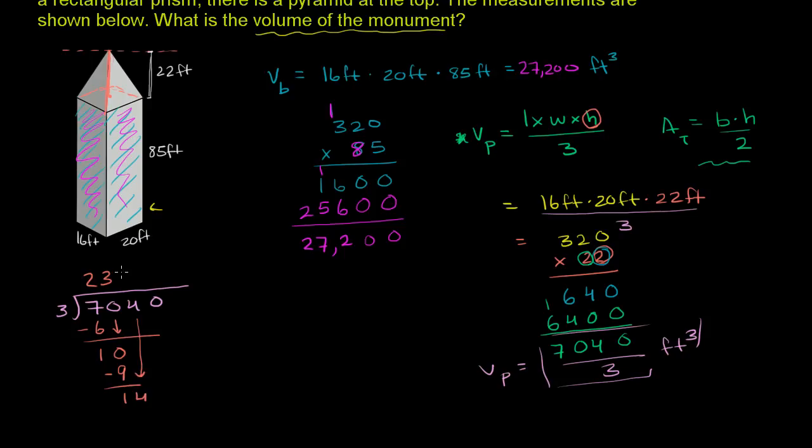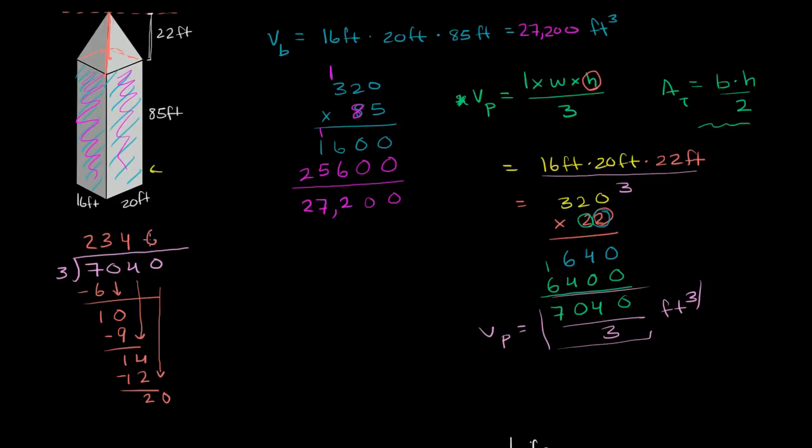Subtract. Bring down the 0. So 3 goes into 20 six times. 6 times 3 is 18. You subtract. You have a remainder 2.